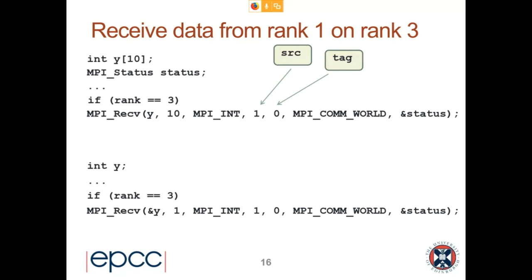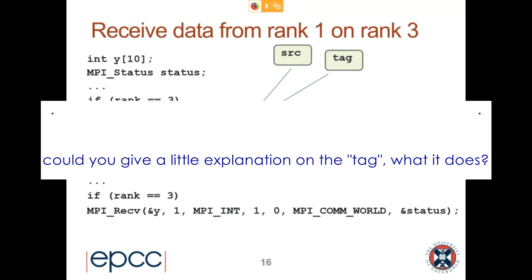The send buffer can be much longer than the actual size of message you send — if you just want to send the first 10 elements of an array you can do that. But if the buffer is shorter than your count that will be bad. Same at the receive end: the received buffer can be larger but it cannot be smaller than the message you receive, or you will run into problems. Ideally of course those counts will always just match up.